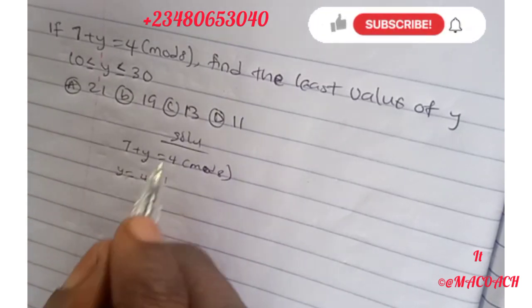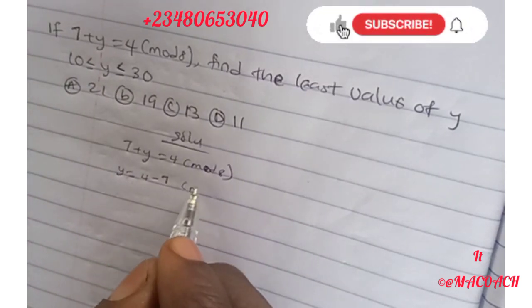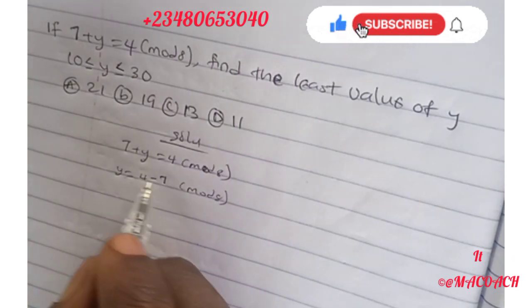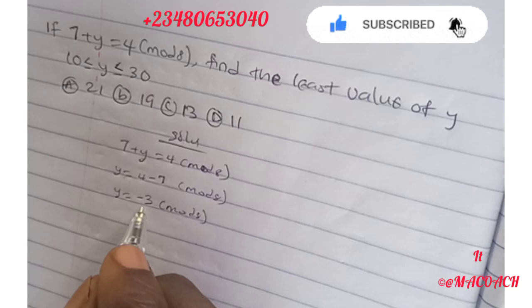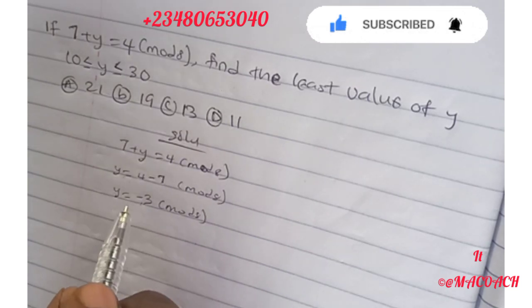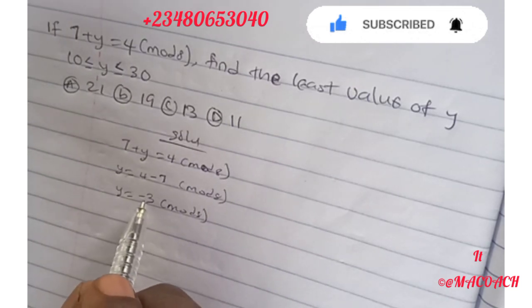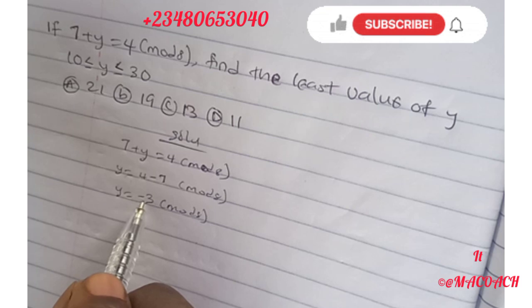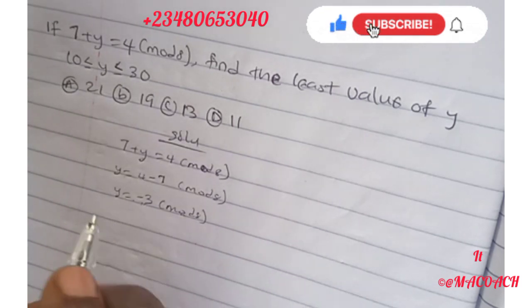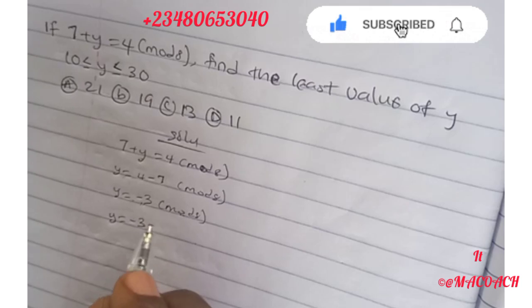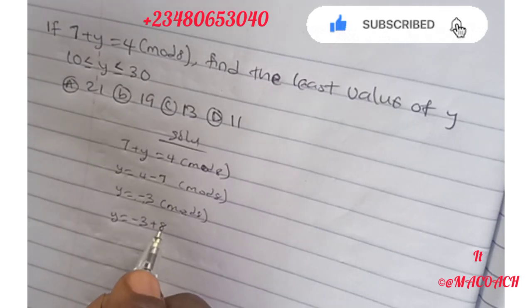4 - 7 gives us y = -3 (mod 8). Y cannot be -3 because we cannot have a negative number in modular arithmetic. We need to add 8 to this. y = -3 + 8 = 5, so y = 5.